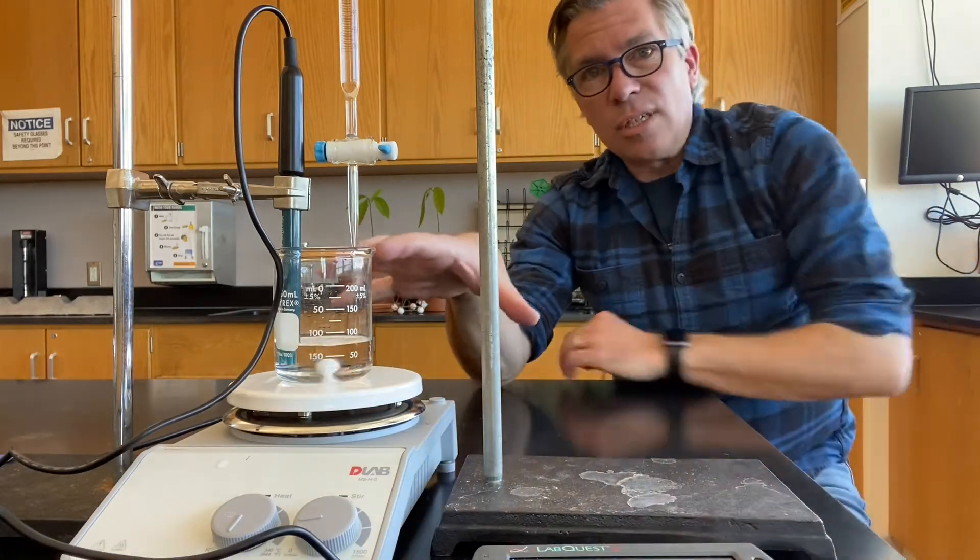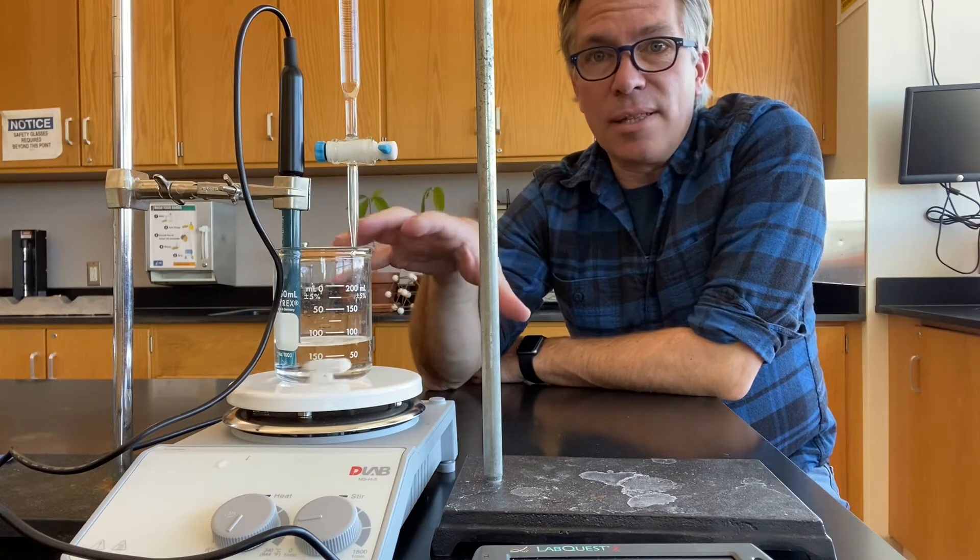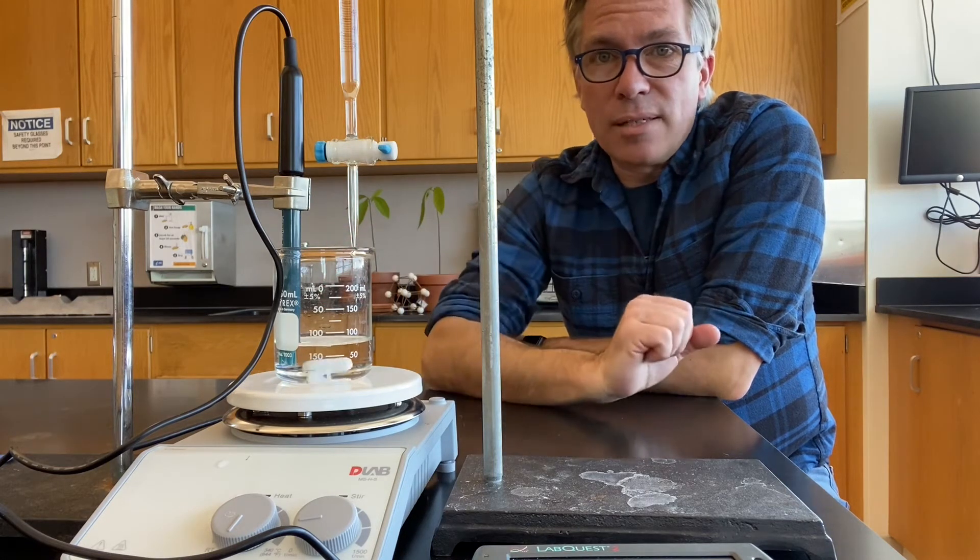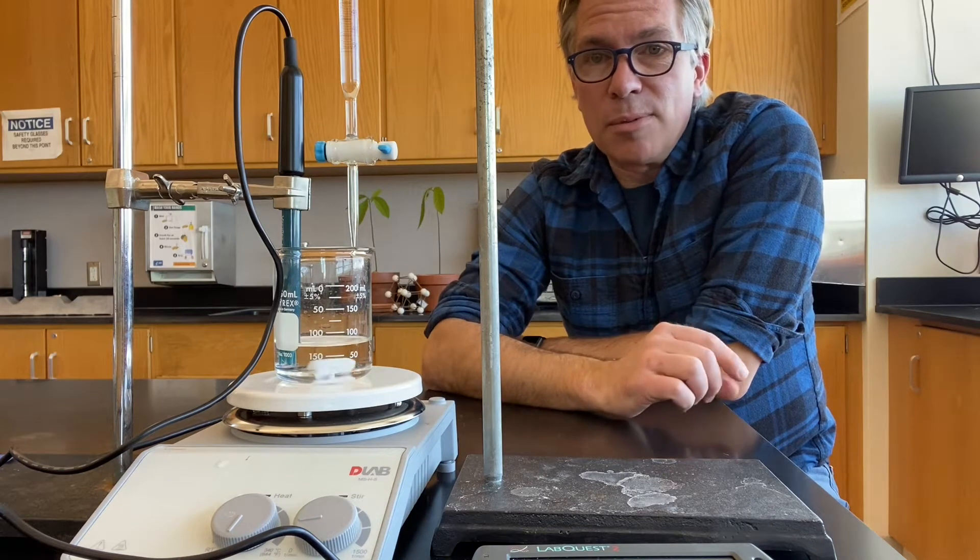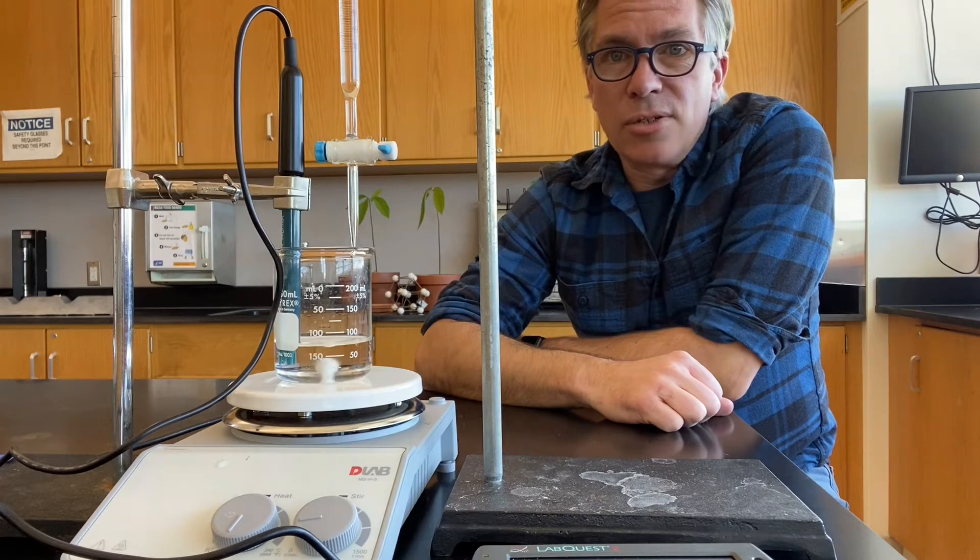In this solution I've put a small amount of the weak acid I want to test and find the Ka for. It has a molar mass of 104.07 grams per mole and I put a little bit of it in just a little under a hundred milliliters of water.